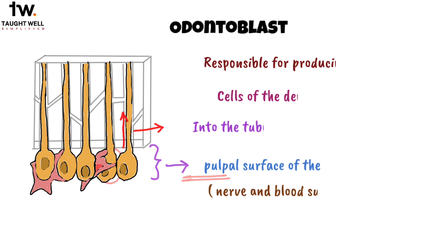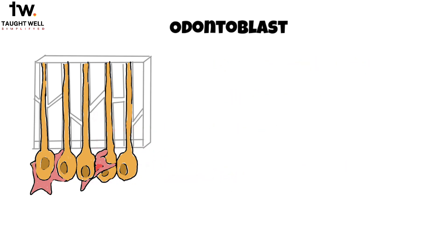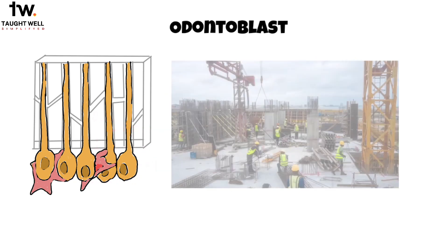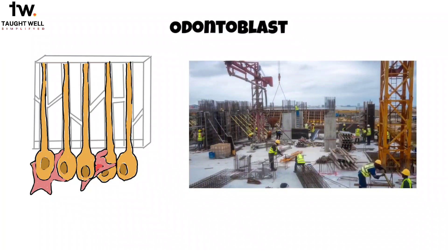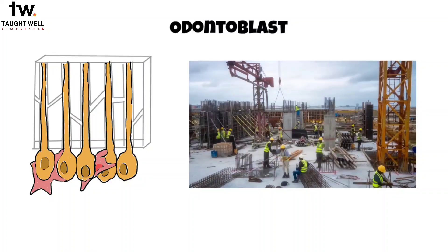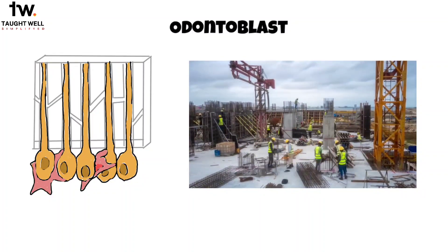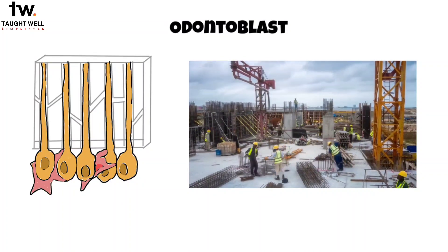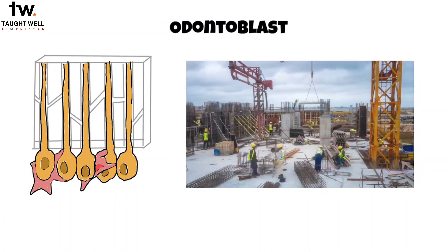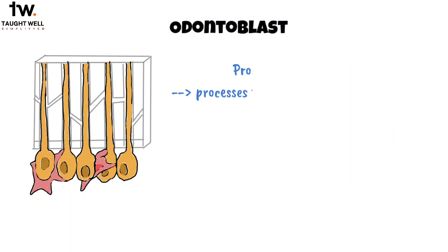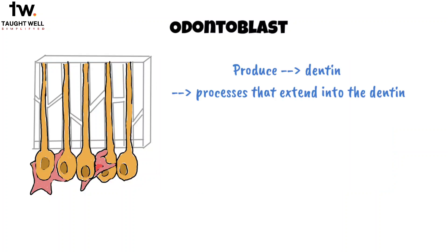Think of it this way: the odontoblasts are like workers stationed outside a building but sending their tools and materials through tubes into the building to construct and repair it. They produce both the dentin and the processes that extend into the dentin, making it a living tissue with active cellular processes.